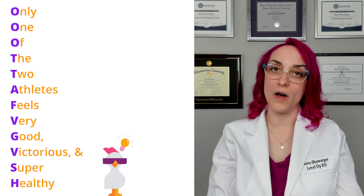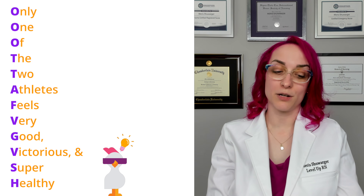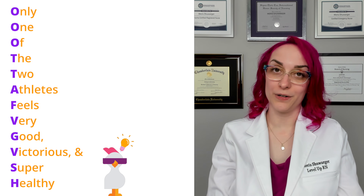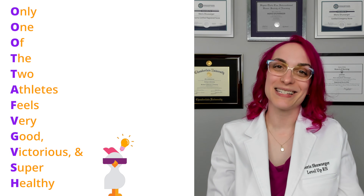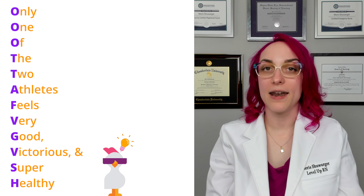If you know us, you know that here at Level Up RN we love our mnemonics — our cool chicken mnemonics. We have two: one to remember the names of the cranial nerves, and one to remember the types. Our mnemonic for the names is: 'Only one of the two athletes feels very good, victorious, and super healthy.' That gives you olfactory, optic, oculomotor, trochlear, trigeminal, abducens, facial, vestibulocochlear, glossopharyngeal, vagus, spinal accessory, and hypoglossal.